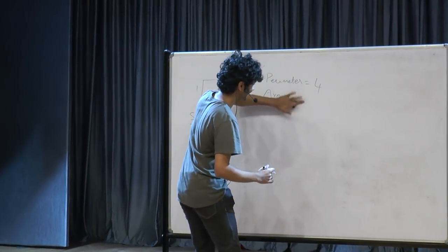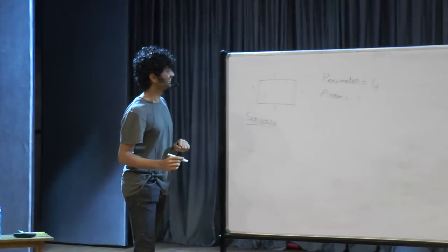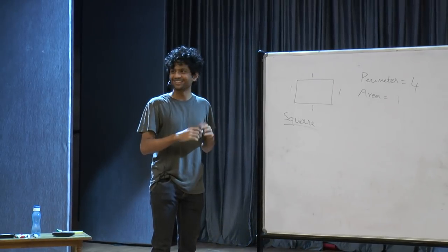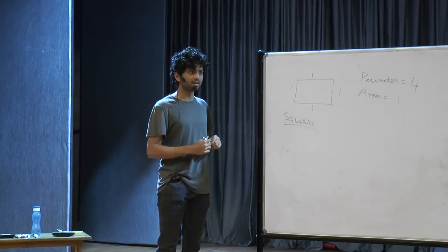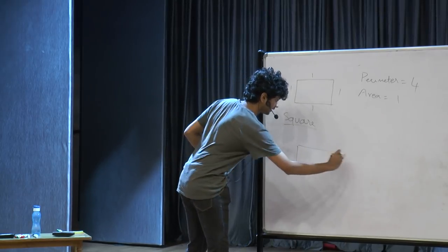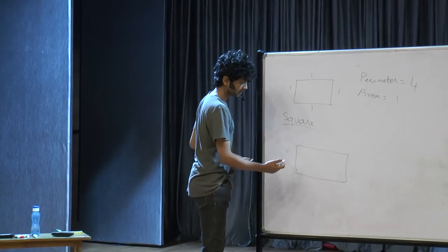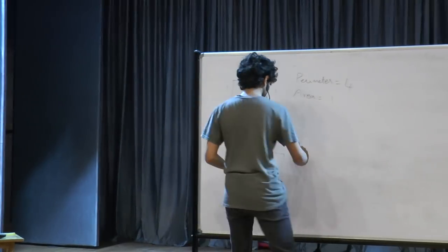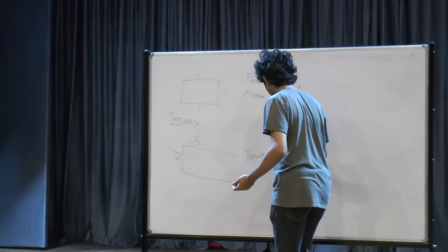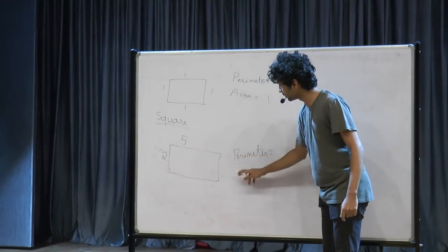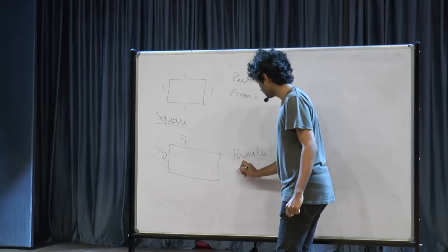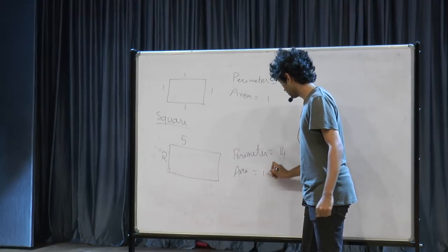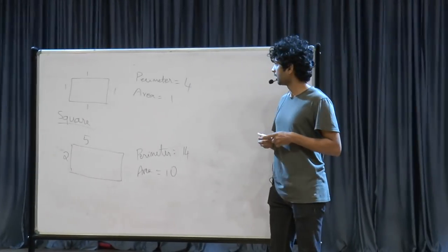Let's stick to two-dimensional shapes — rectangles. If I take a rectangle of side lengths two and five, the perimeter is just the sum of lengths of the sides: two plus five plus two plus five, which is fourteen. The area is two times five, which is ten.